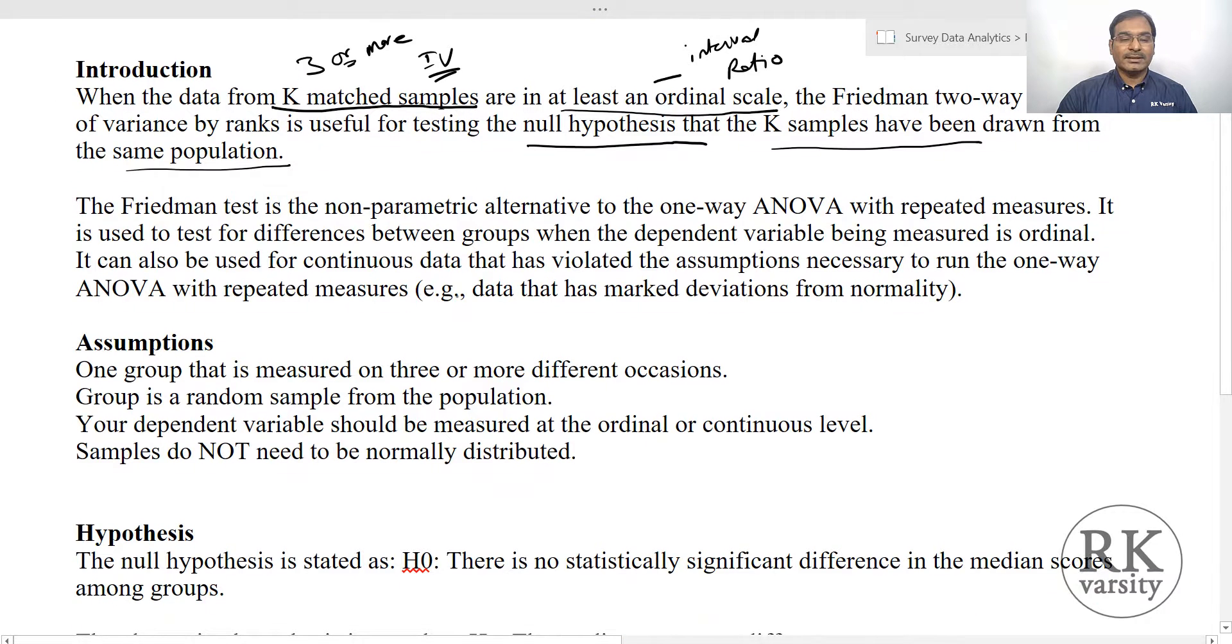The Friedman's test is a non-parametric alternative to the one-way ANOVA with repeated measures. It is used to test for differences between groups when the dependent variable being measured is ordinal. It can also be useful for continuous data that has violated the assumptions necessary to run one-way ANOVA. So if data is not normally distributed, then as an alternative to analysis of variance, we can run a Friedman's test for K-related samples.